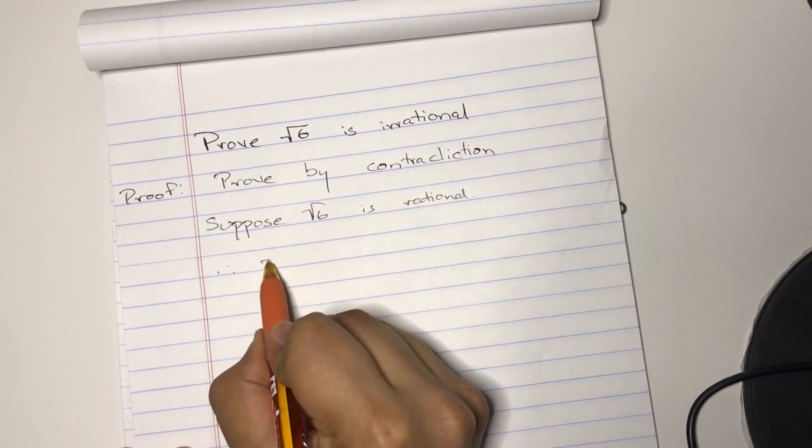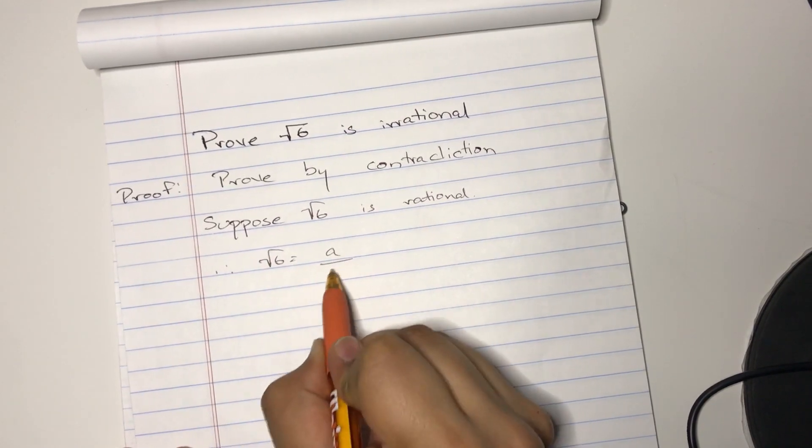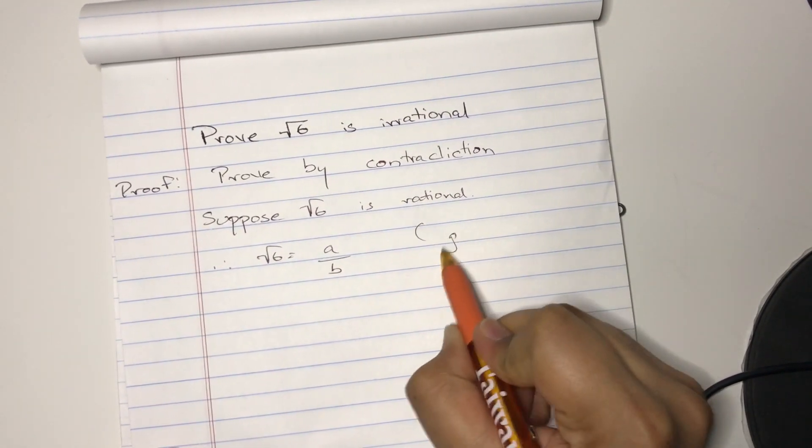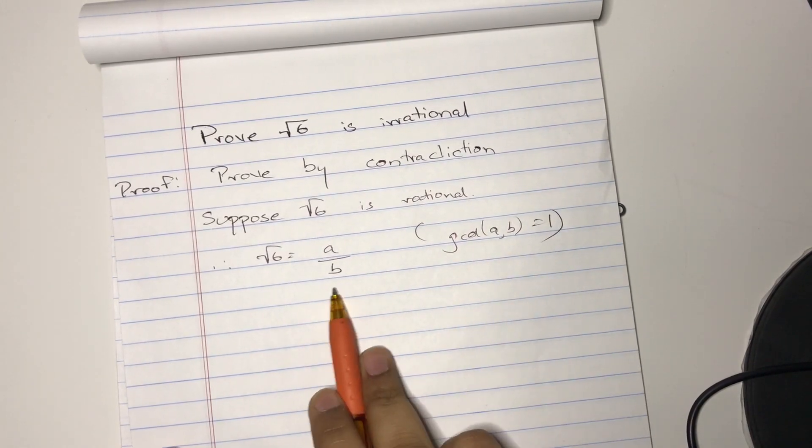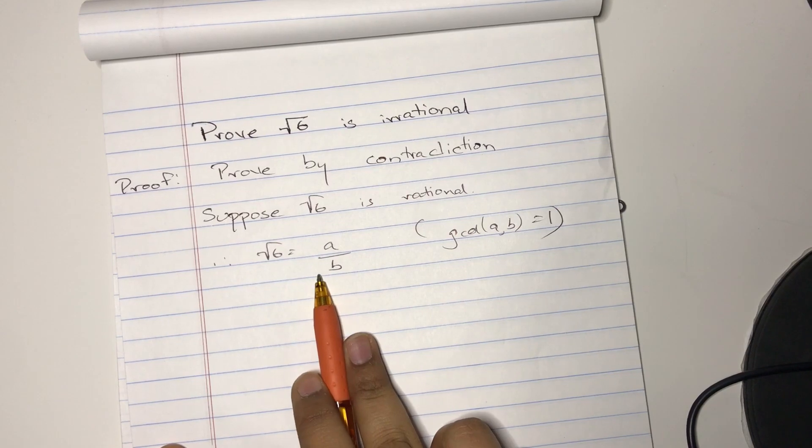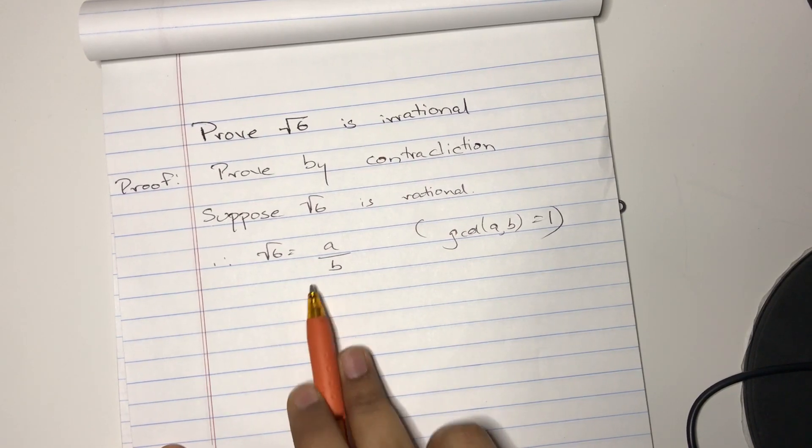Therefore, it could be expressed as some A divided by B, where GCD of A and B equals 1. And the reason for this is that it just means that this is as low as it can be.